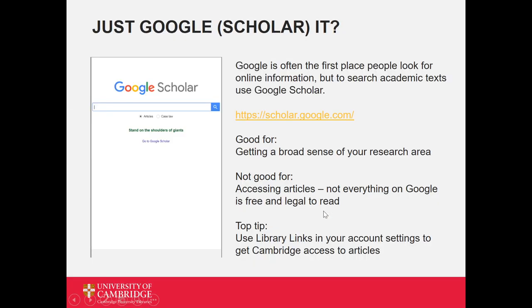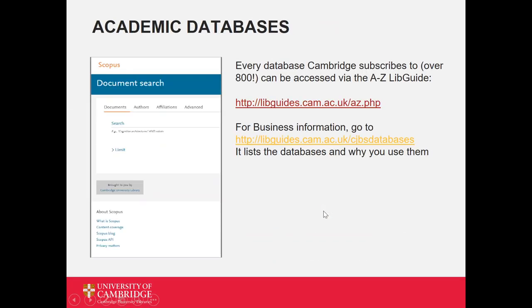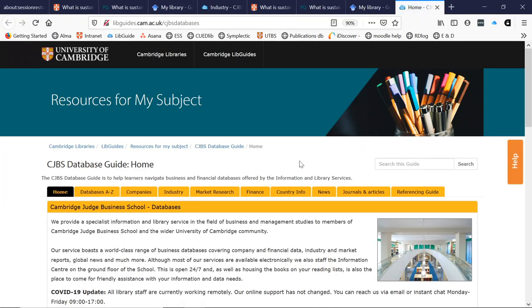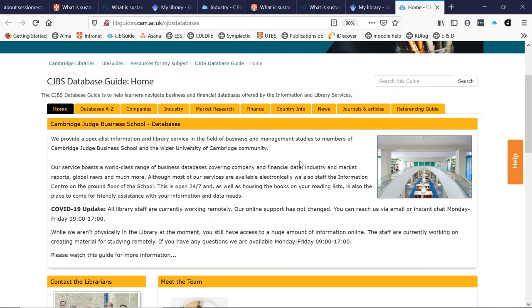Let's look at our final resource: academic databases. We have over 800 of them. To make it more relevant to you, I would suggest that you go and look at the business databases, which are available from the Cambridge Judge Business School. Here is their libguide. As you can see, they have a huge range of databases that cover a wide range of topics in the business world.